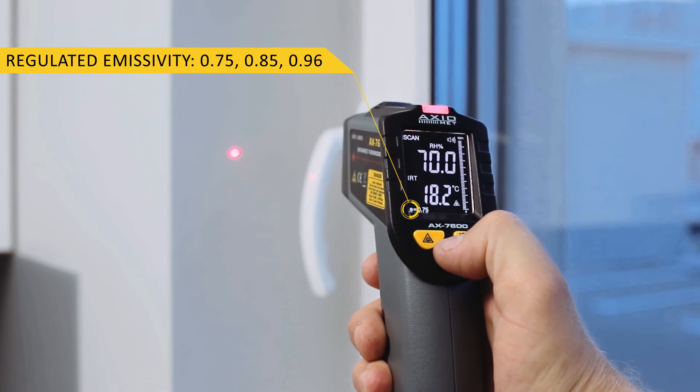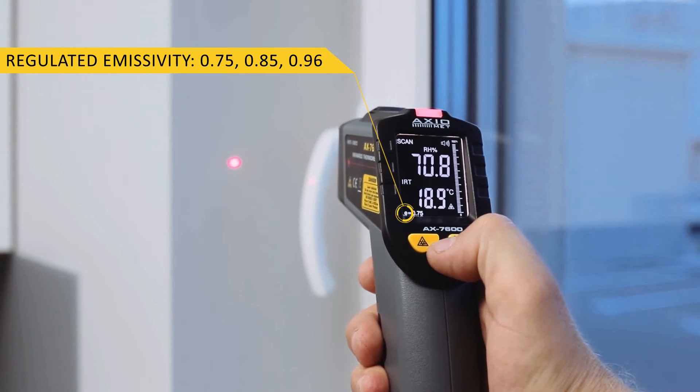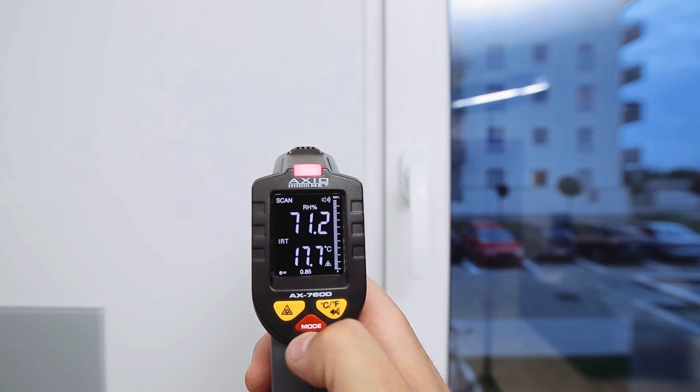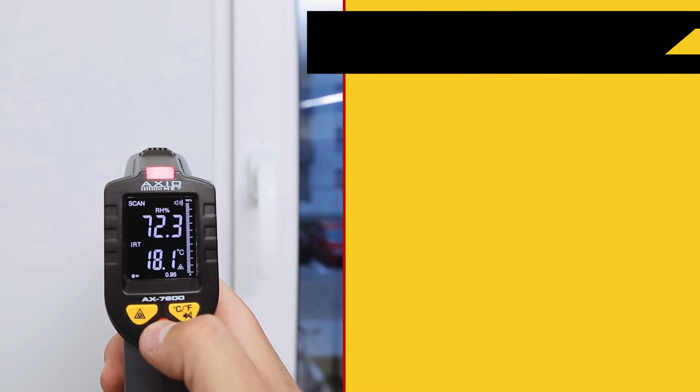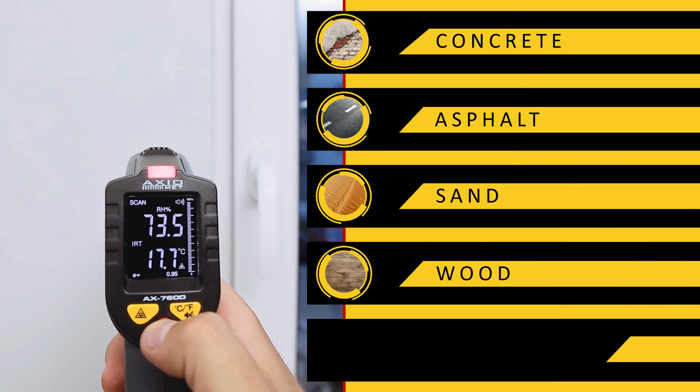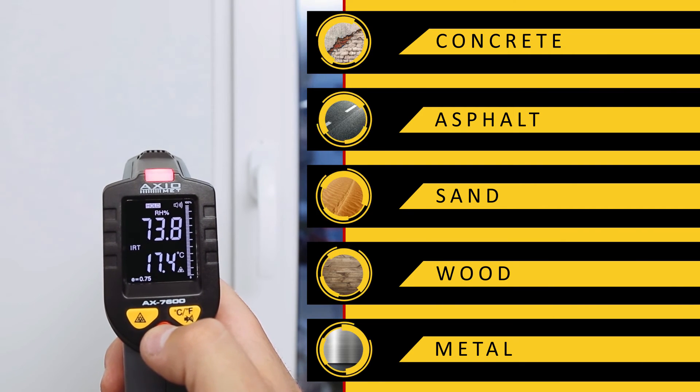Regulated emissivity lets you adjust measurement to the type of material. The pyrometer can be used to measure temperature of building materials such as concrete, asphalt, sand, and also wooden and metal materials, especially shiny ones.